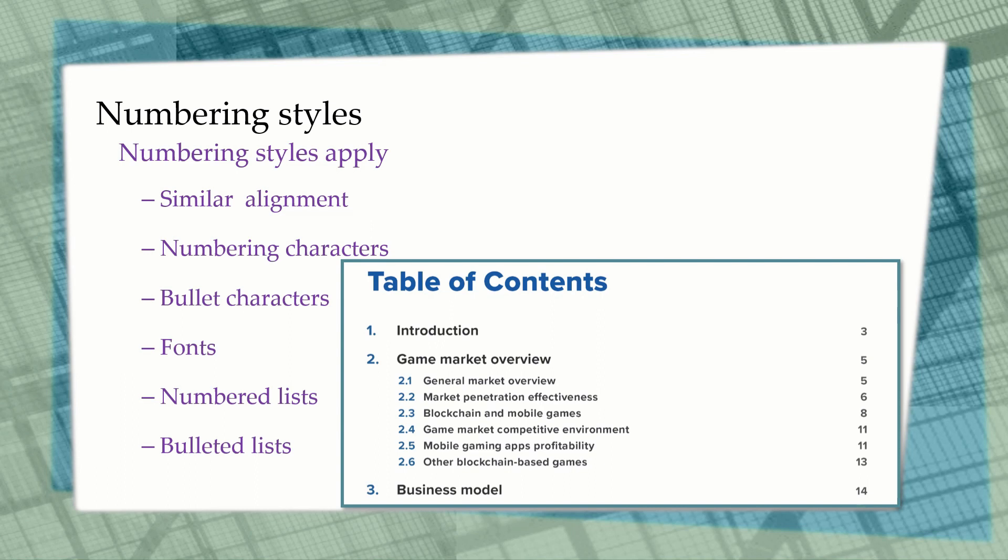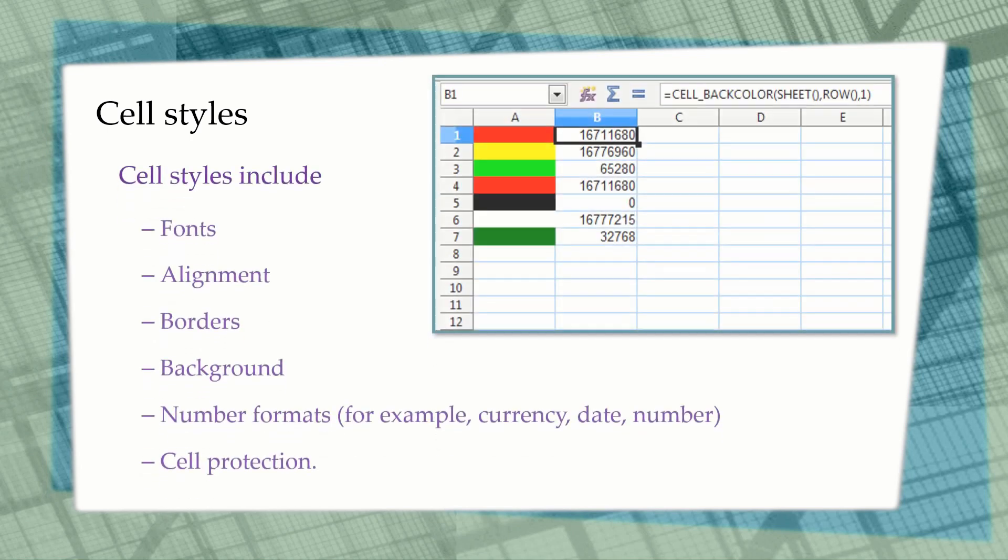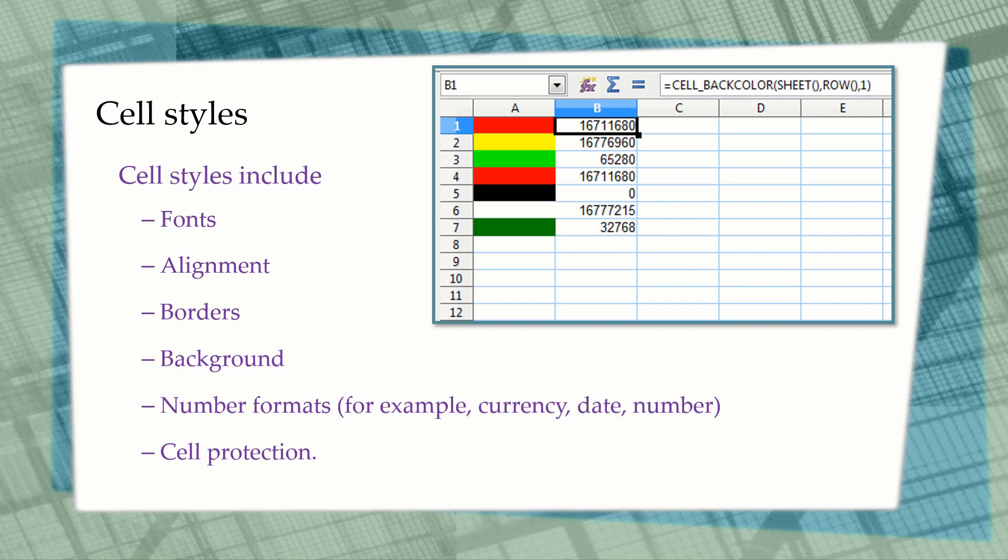The sixth style is the cell style. Cell styles are not used in Writer; they are used in Calc, the spreadsheet program. Cell styles include fonts, alignment, borders, background, number formats, and cell protection.